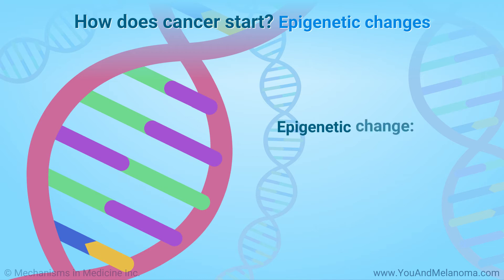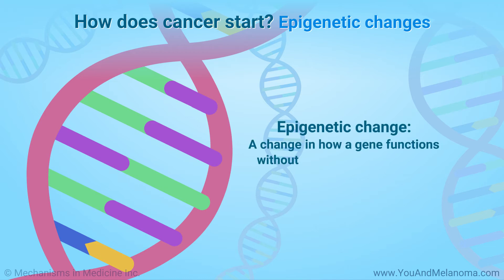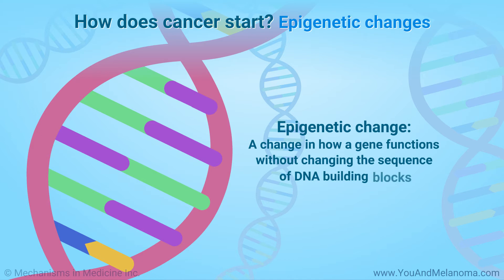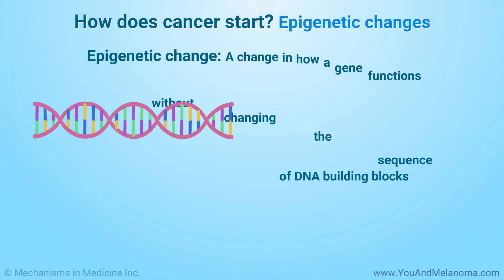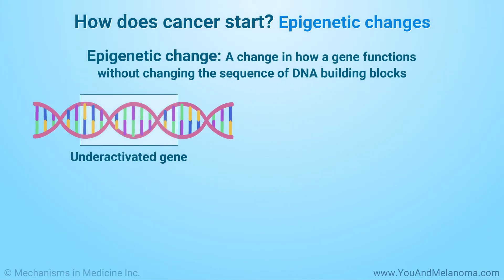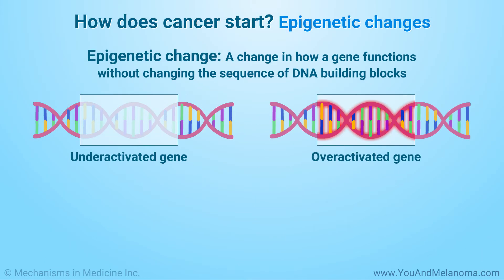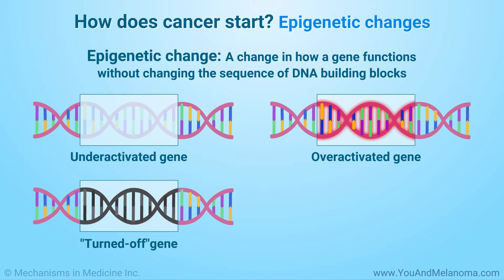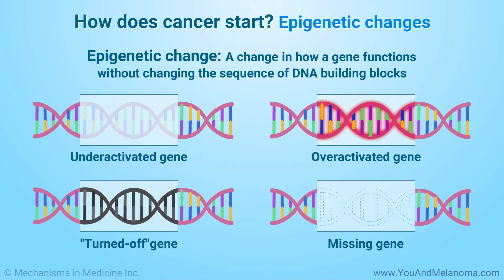The second way genes can change is that a gene's functioning changes without changing the sequence of DNA building blocks. This type of change may cause the gene to be underactivated, overactivated, or turned off. Or, all or part of the gene may be missing.